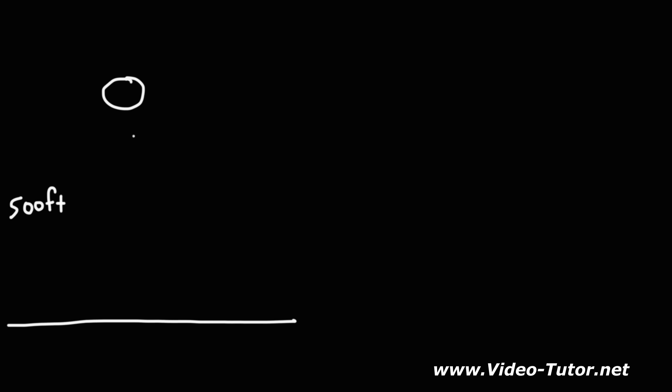Here's another situation: a ball is dropped from some height h, let's say 500 feet above the ground. Are the forces acting on the ball balanced or unbalanced? Once you release the ball from rest, the dominant force acting on it is the weight force. This is an unbalanced situation — there's a net force acting on the object. It's in free fall, accelerating toward the ground.